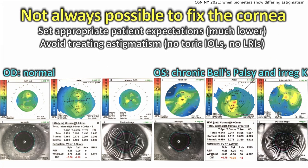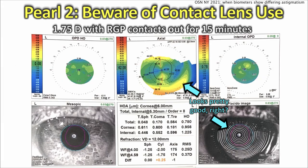It's not always possible to fix the cornea, so you need to set appropriate patient expectations much lower and avoid treating the astigmatism if it's so irregular you can't make anything out of it — don't do a toric lens or an LRI. The patient's right eye looks pretty normal; the patient's left eye has a chronic Bell's palsy and an irregular cornea.